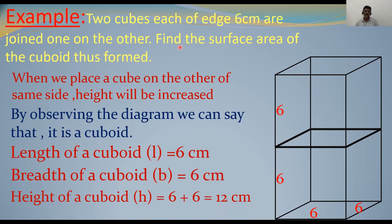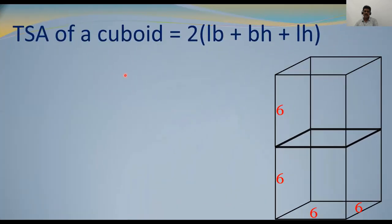We have to find the surface area of the cuboid thus formed. As I said in previous sessions, surface area means total surface area. Total surface area of a cuboid = 2(LB + BH + LH). This is the formula to find out the surface area.